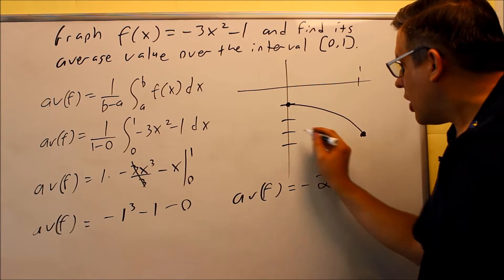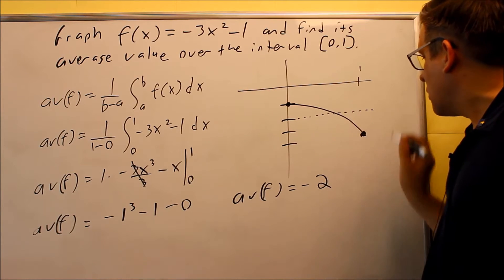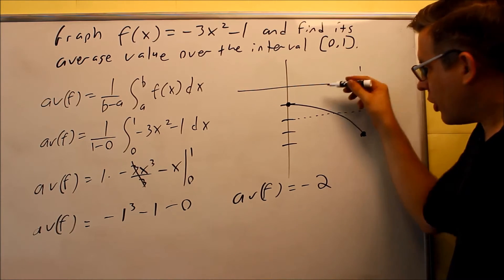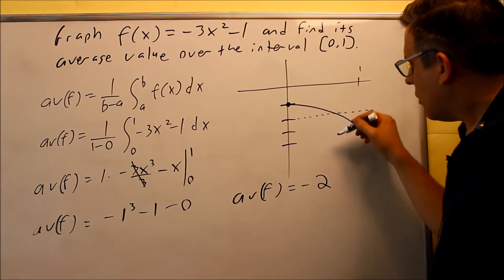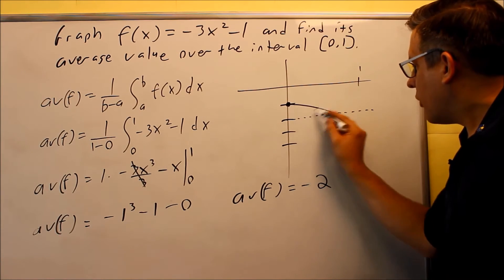So that means that if I draw a line here at negative 2, just like this, we see that that does actually do a pretty good job of splitting this up into, if you're kind of thinking of it as splitting it up into some equal areas.